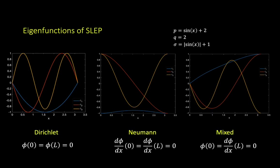Here are the results of numerically solving the regular Sturm-Liouville eigenvalue problem with the following parameters. The graphs show the first three eigenfunctions for three different boundary conditions.